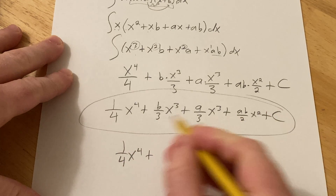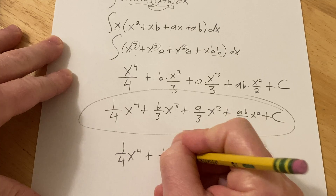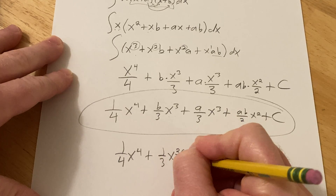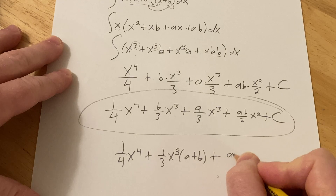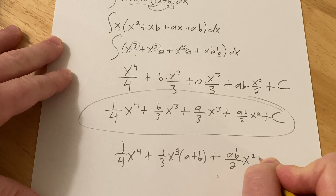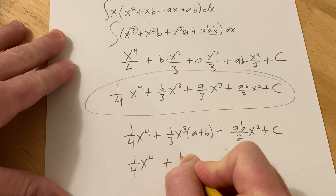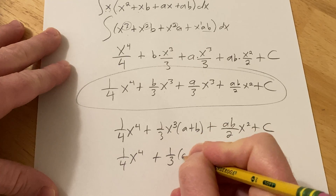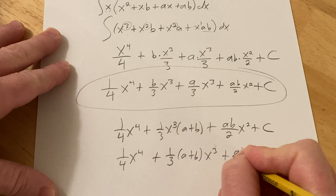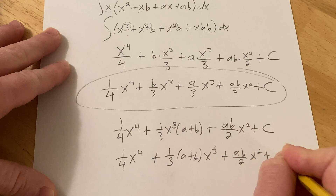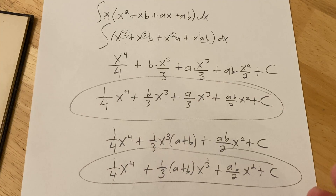It's one of the nice things about having the answers. H.B. Phillips took it a step further — he wrote one-third x cubed times (a plus b), combining those two terms together, and then ab over 2 times x squared plus c. That's what Phillips does in his solution.